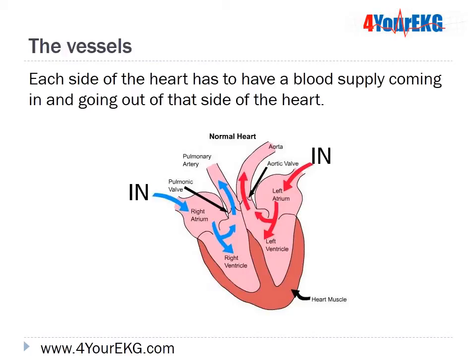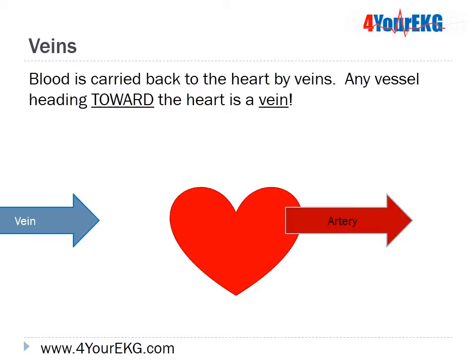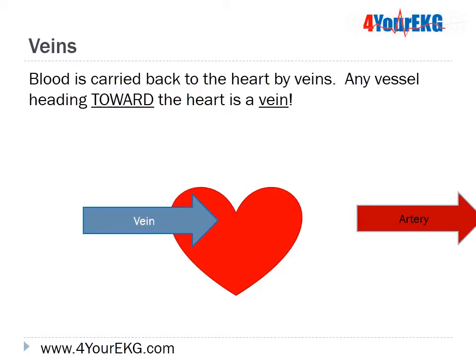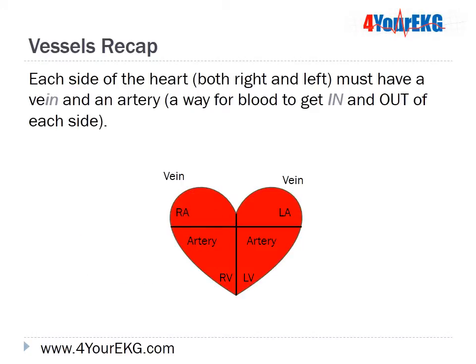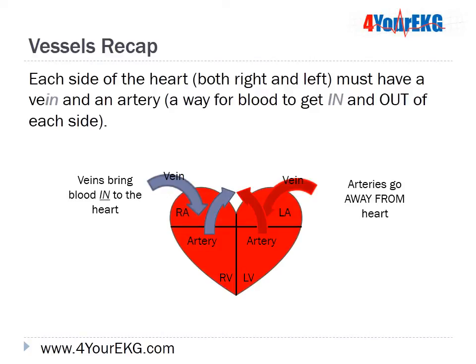Each side of the heart must have a blood supply coming in and going out. Arteries always carry blood away from the heart, so any vessel carrying blood away is an artery. Blood is carried back toward the heart by veins, so any vessel heading toward the heart is a vein. A great way to remember this: the word 'vein' has the word 'in' in it — so veins go into the heart.